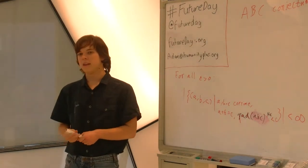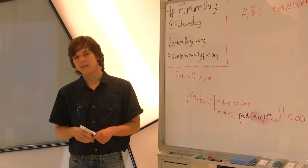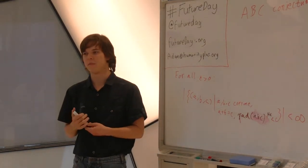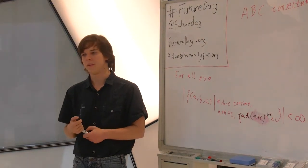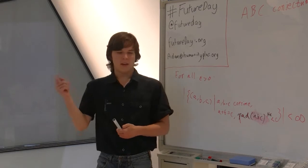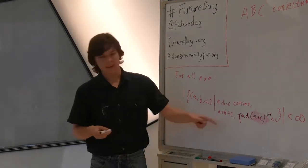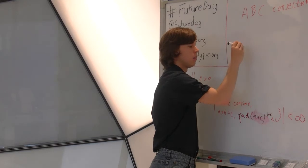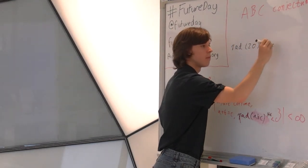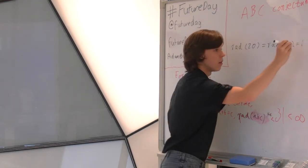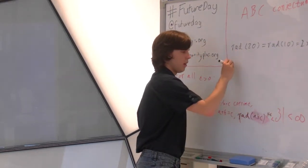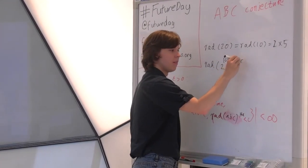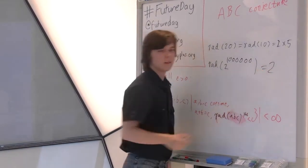And there's this funny notation, rad, A, B, C. The radical of a number is the product of its distinct prime factors. So there's this thing called the fundamental theorem of arithmetic, which says that each number can be uniquely decomposed into a number of prime factors. So for example, ten is equal to two times five. And twenty is equal to two times two times five. So what the radical says is, throw out the duplicates. So rad twenty is equal to rad ten, is equal to two times five. And rad two to the power of a million is equal to two.